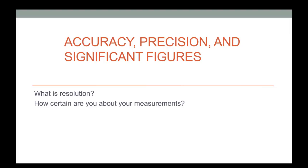In chemistry, accuracy, precision, and significant figures are very important. When we make measurements, it's important to know what the resolution is — how certain we are. Resolution here doesn't mean a New Year's resolution — it means how well the machines measure whatever you're measuring.